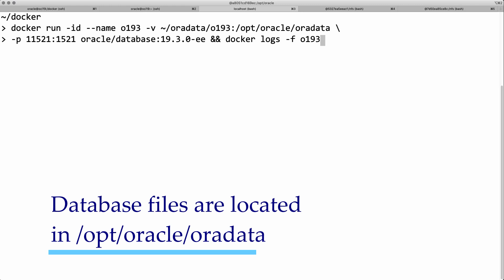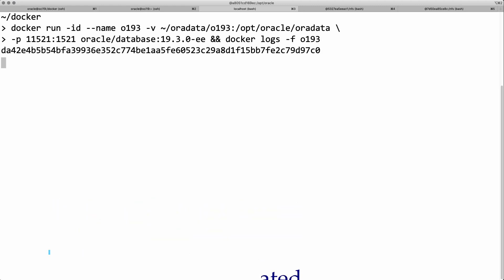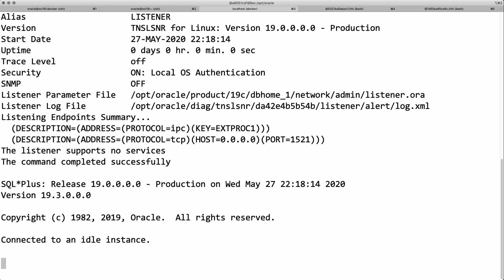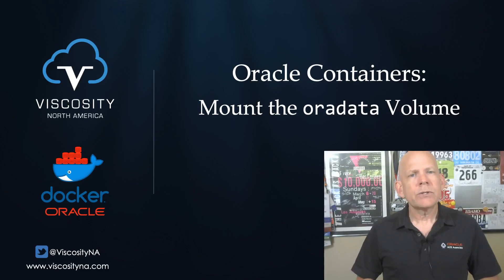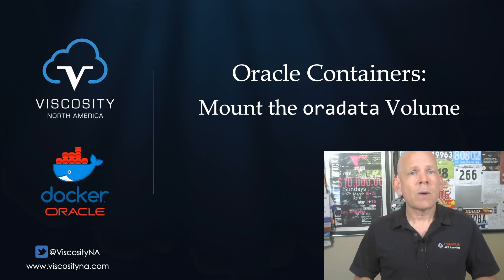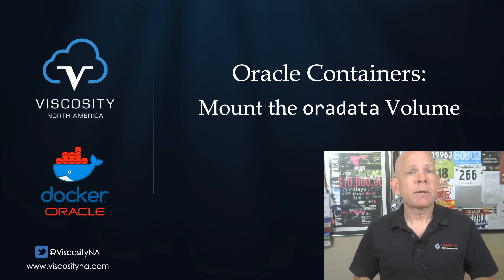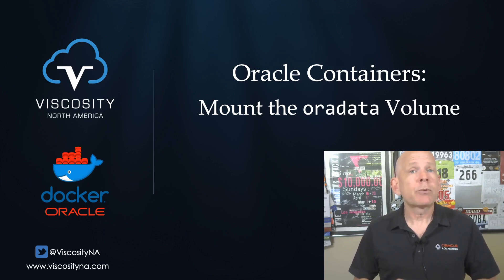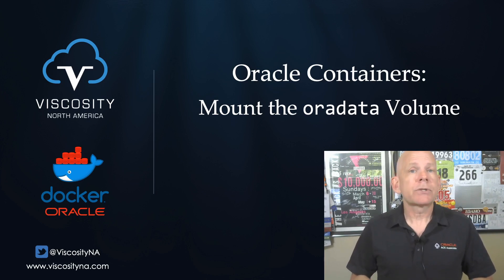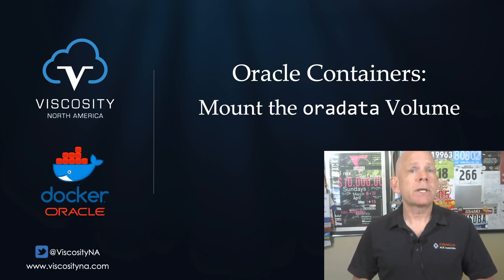Therefore, if I run the same command again and check the logs as it starts, I see that it jumps straight to starting and opening my database. When you start a container for an oracle database in docker, the first thing it does is check to see if a database already exists. Because we mounted an existing set of database files to the opt oracle oradata file system in the container we just started, it found those files from the previous incarnation of this database. Because those files were there, docker said it already has a database and skipped straight ahead to start the listener and start the database, bypassing the entire database creation process.